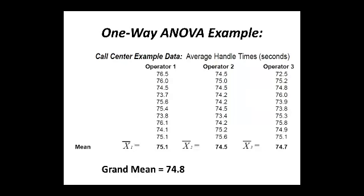The data is given in the question. Average handle time in seconds is provided for operator 1, operator 2, and operator 3. The mean for operator 1 is 75.1 seconds, the mean for operator 2 is 74.5 seconds, the mean for operator 3 is 74.7 seconds, and the grand mean is 74.8 seconds.